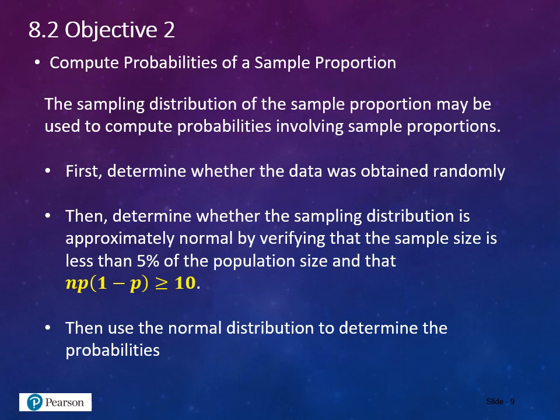The sampling distribution of the sample proportion may be used to compute probabilities involving sample proportions. First, make sure the data was obtained randomly. Then verify the sampling distribution is approximately normal by confirming the sample size is less than 5% of the population and that n times p times (1 minus p) is greater than or equal to 10. Then use the normal distribution to determine the probabilities — the area under the curve.